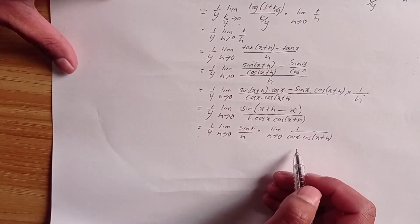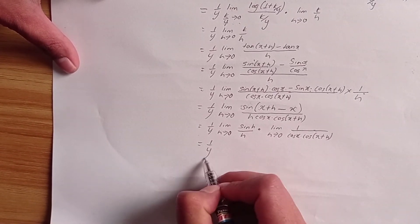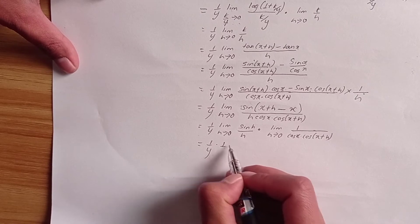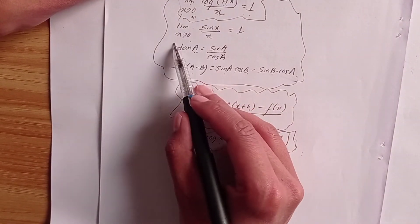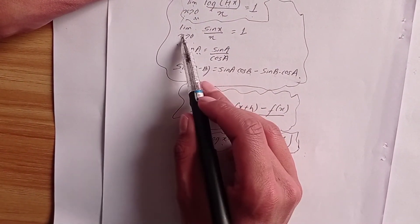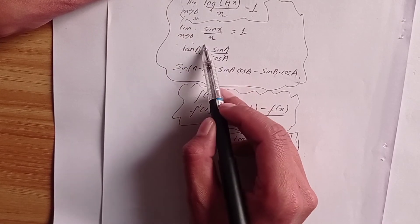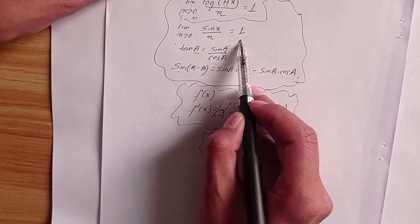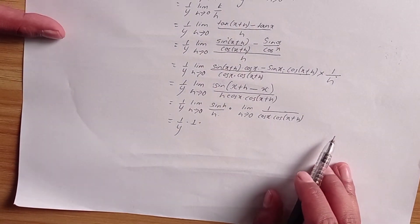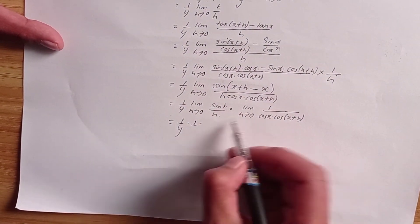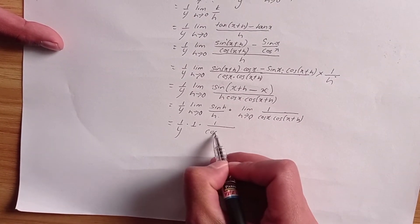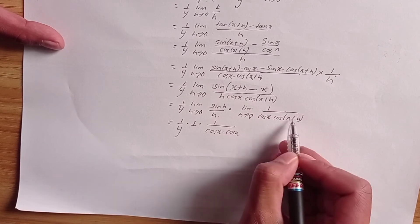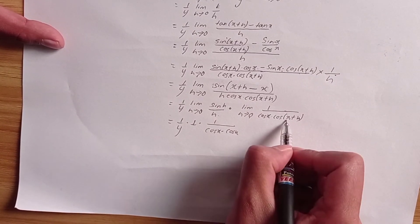Applying the limit sin(h)/h = 1, this simplifies to: 1/y times 1 times 1/[cos(x)·cos(x + h)]. As h tends to 0, cos(x + h) becomes cos(x). So the expression becomes 1/y times 1/cos²(x).